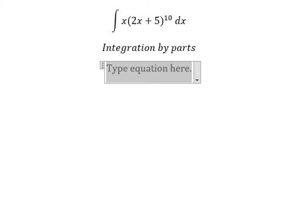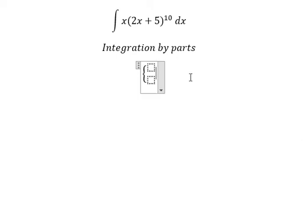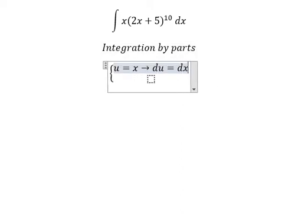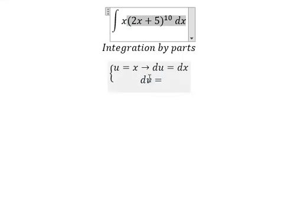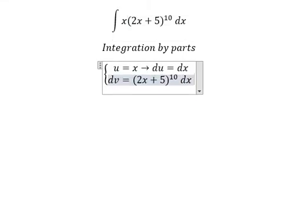I will put u equals to x. If we do the first derivative for both sides, we got du equals dx. dv, that is this one, the integral of (2x+5)^10 dx.